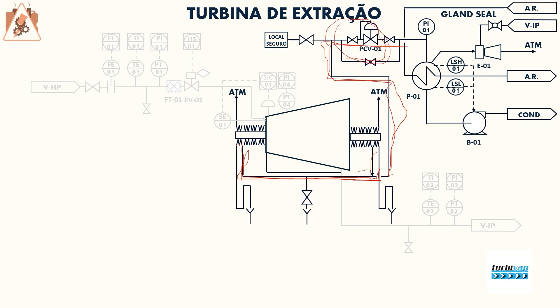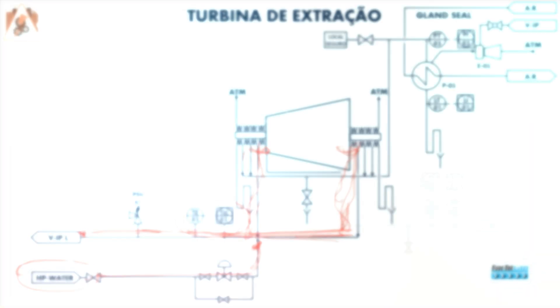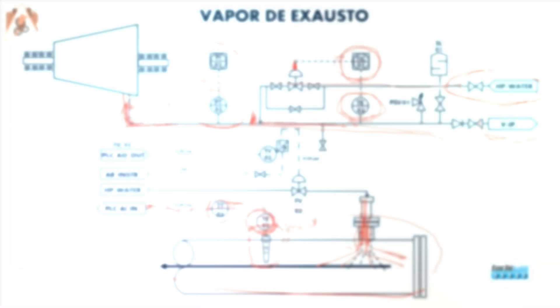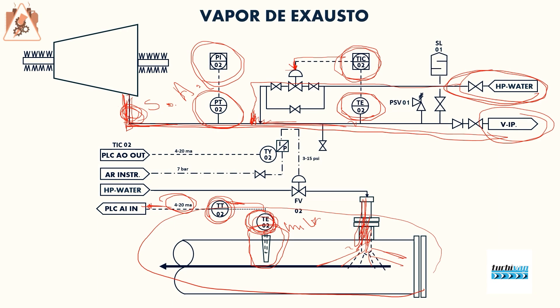The PSV is a self-piloted valve that we can see here at the steam outlet. The labyrinth follows the same strategy, and when we come to a capacitor, the PLC will perform the calculation and control of the valve that injects the water.